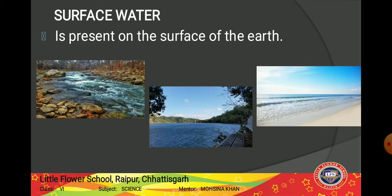Another source of surface water is sea water. All streams and rivers ultimately flow into the seas. Sea water contains dissolved salt — that is why sea and ocean water is so salty — because all the rivers carry dissolved salts which collect in the sea. Due to the presence of a large amount of common salt, sea water is salty in taste and is also called saline water. It is unfit for drinking, agriculture, or industrial needs.